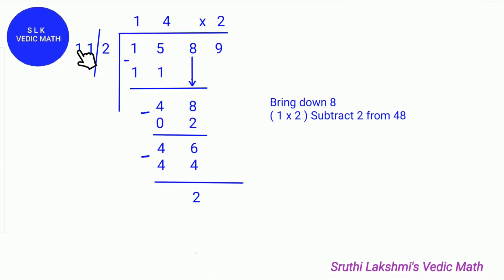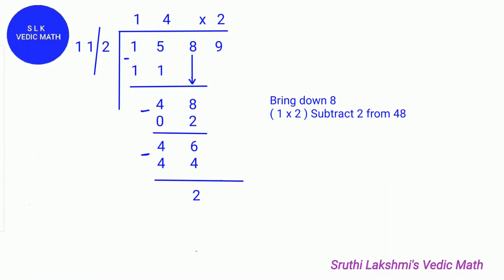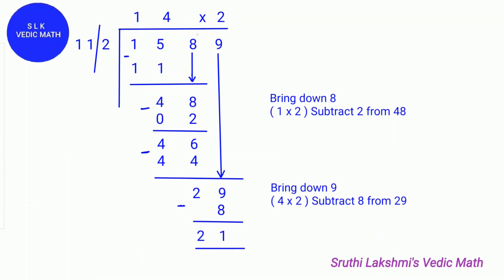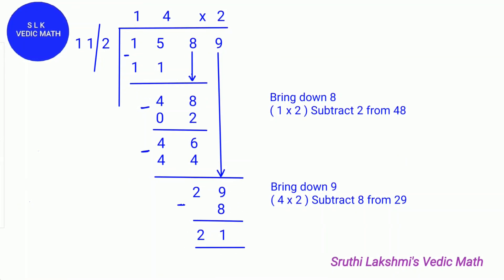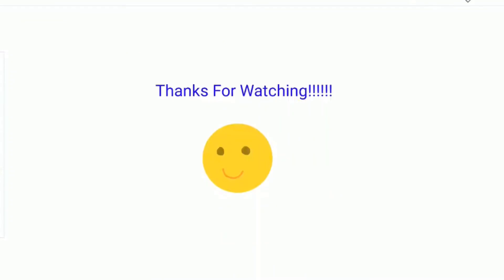Next we find how many 11s can fit in 46. Four 11s can fit, so we write 4 on the quotient line and do 11 times 4, which is 44. We subtract 46 minus 44, which equals 2. Next we bring down the 9. Then the last digit of quotient times the last digit of divisor: 4 times 2 is 8. So we do 29 minus 8, which equals 21. The quotient is 14 and the remainder is 21. Thanks for watching.